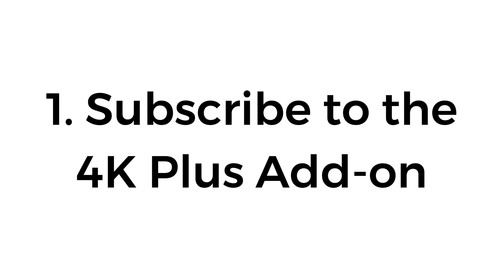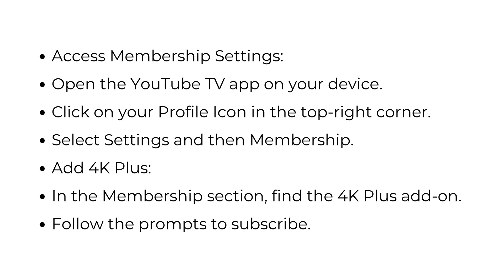Number one, subscribe to the 4K Plus add-on. Open the YouTube TV app on your device and click on your profile icon in the top right corner, then select Settings and then Membership. In the Membership section, find the 4K Plus add-on and follow the prompts to subscribe.